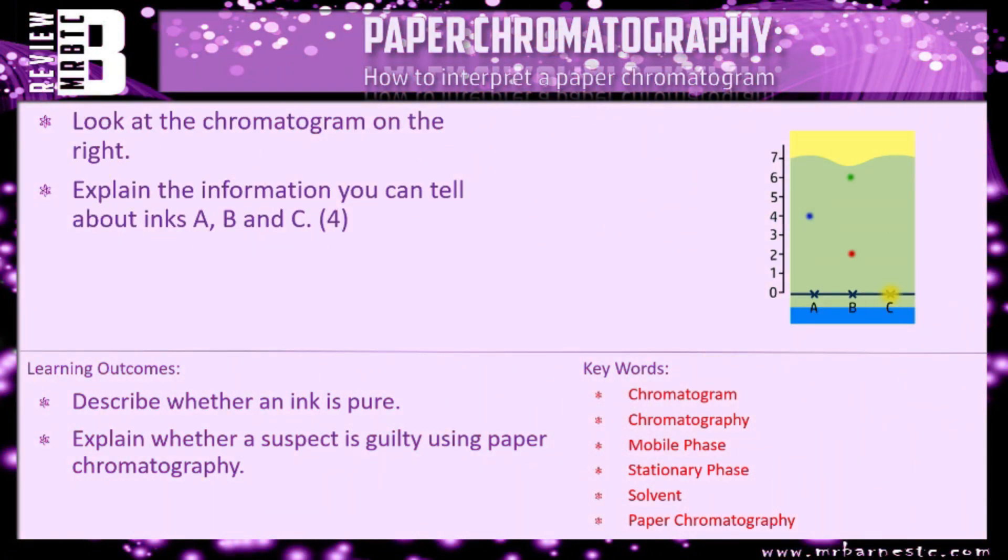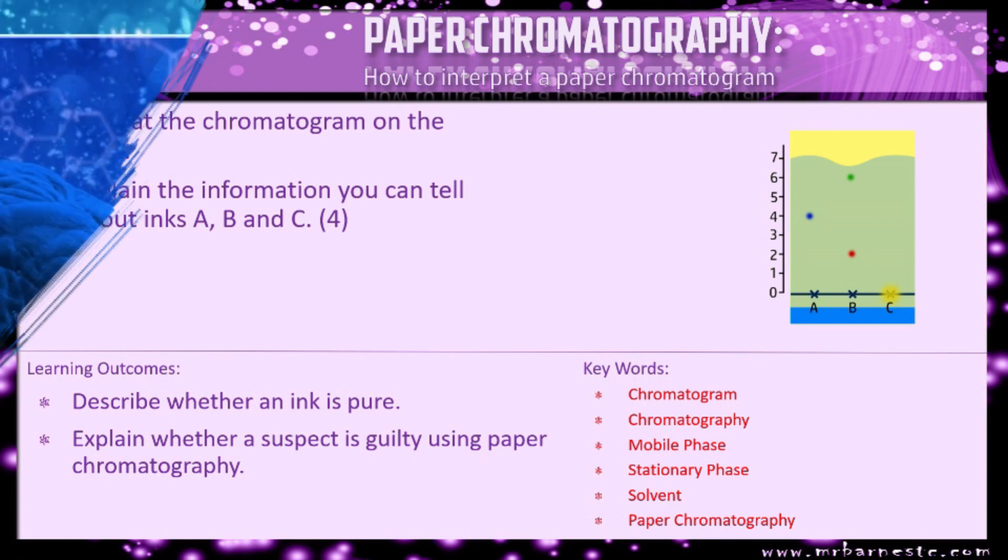I've got a review question for you which is again look at the chromatogram on the right and then explain all the information that you can tell me about inks A, B and C. So what do you know about ink A from looking at it? What do you know about ink B? What do you know about ink C? If you want to have a go at answering it put it in the comments. I can tell you whether you're right or not. That brings this video to an end.